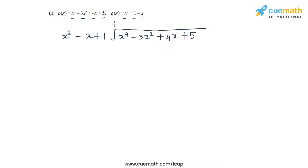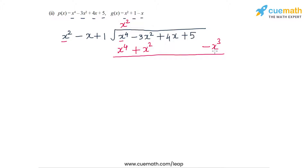The first multiplier is x², because I need to turn x² into x⁴. This multiplier generates the terms x⁴ - x³ + x². Since there is no x³ term in the dividend, I write -x³ here, then +x². After subtracting, -x³ becomes +x³, giving x³ - 4x² + 4x + 5.